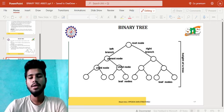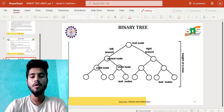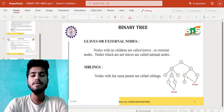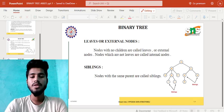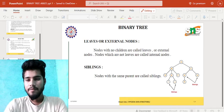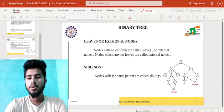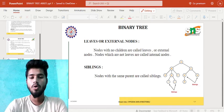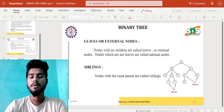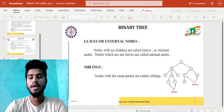Binary tree leaves or external nodes: nodes with no children are called leaves or external nodes. Nodes which are not leaves are called internal nodes. In this diagram we can see the root node, child node, parent node, and leaf node. Siblings: nodes with the same parents are called siblings.